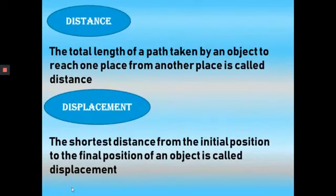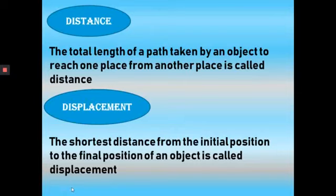Now we will see what is called distance and displacement. Distance is the total length of a path taken by an object to reach one place from another place. Displacement is the shortest distance from the initial position to the final position of an object.